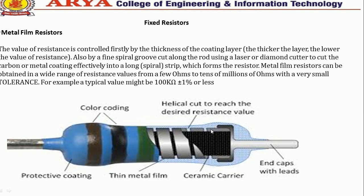Metal film resistors can be obtained in a wider range of resistance values, from a few ohms to tens of millions of ohms, with a very small tolerance. For example, a typical value might be 100 kilohms plus or minus one percent or less.